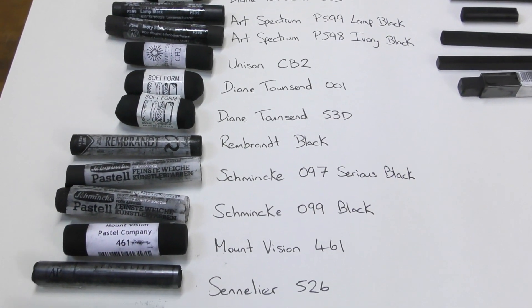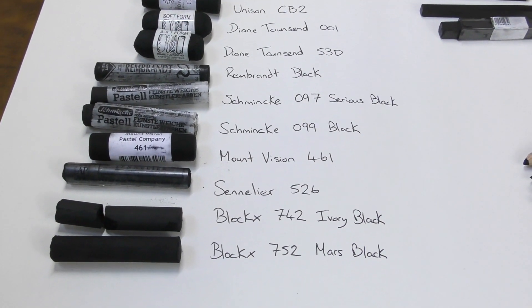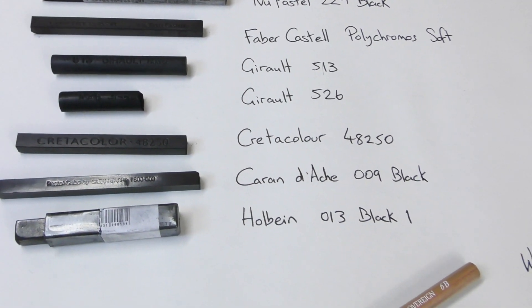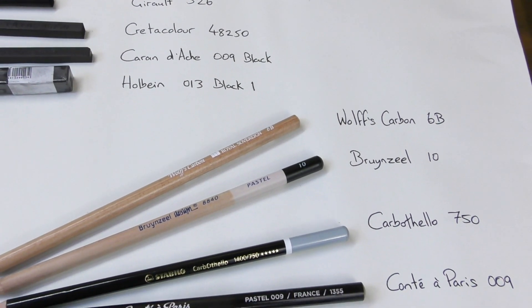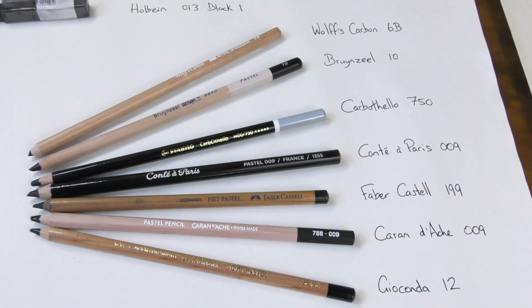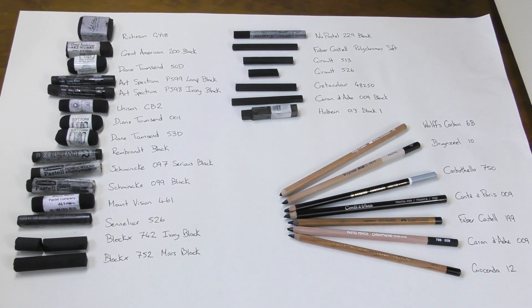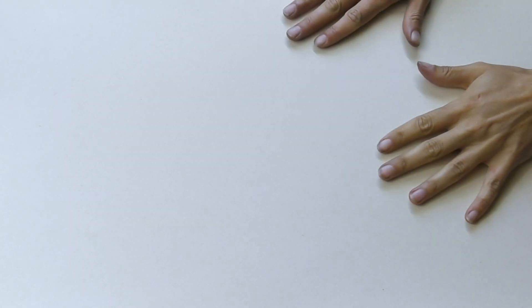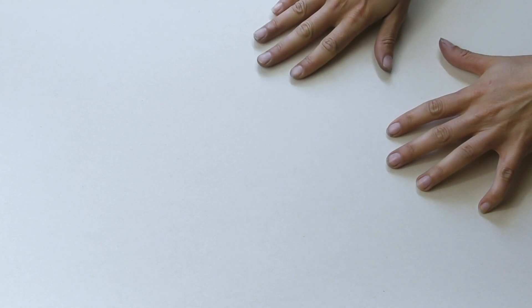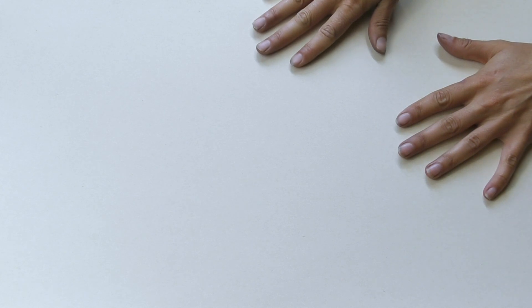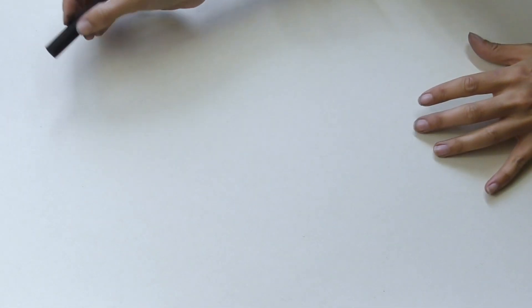If you want to get your hands on any of these pastels, I will add some links in the description below. Some of them I bought from Jackson's Art in the UK, who I often deal with. And also I asked Dakota Pastels in the US, who have a fantastic range, especially of some of the American brands which you can't really get here. And their staff there are so amazing, they literally went around the shop and picked me out a great selection. So big thanks to Dakota Pastels for helping me gather this wonderful collection of blacks.